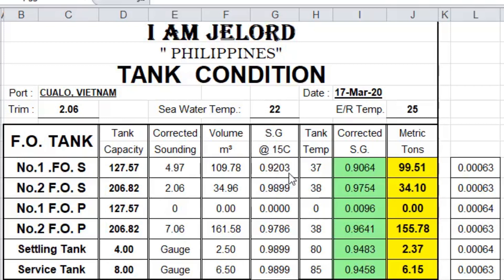The SG at 15 degrees is 0.9203 and the tank temperature is 37. I'm going to explain how this 0.9064 becomes 0.9064 and how this 99.51 becomes 99.51.